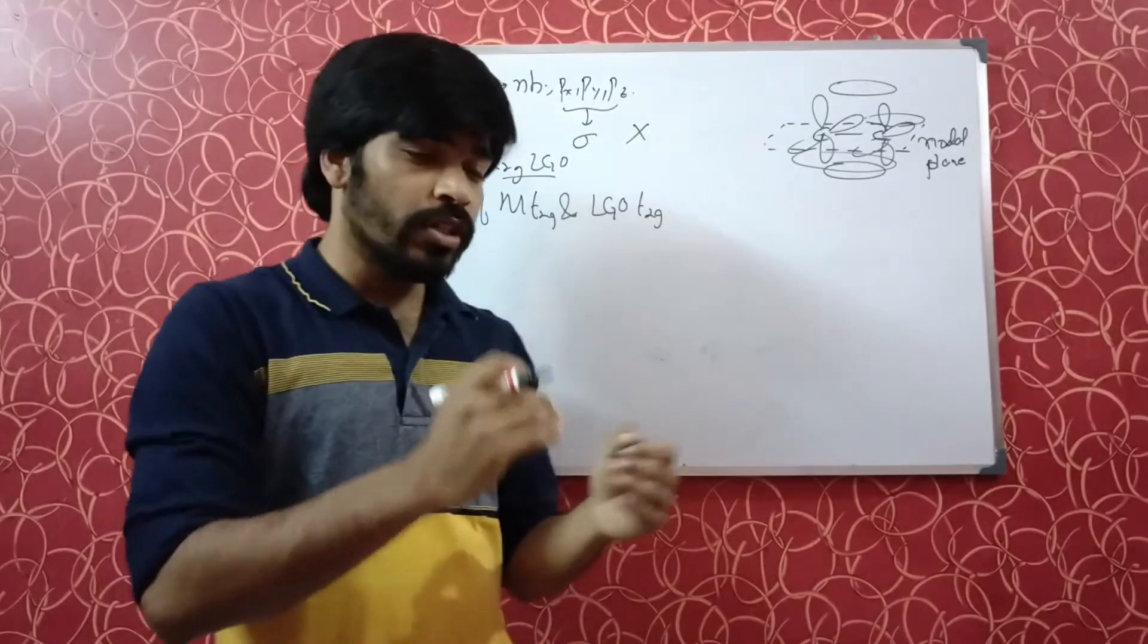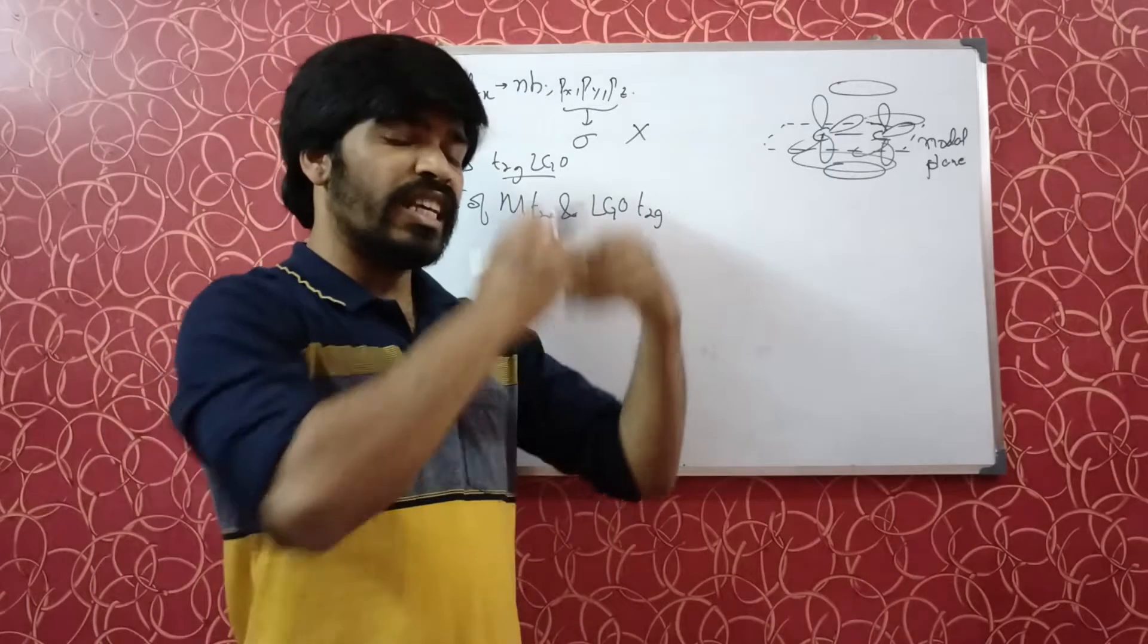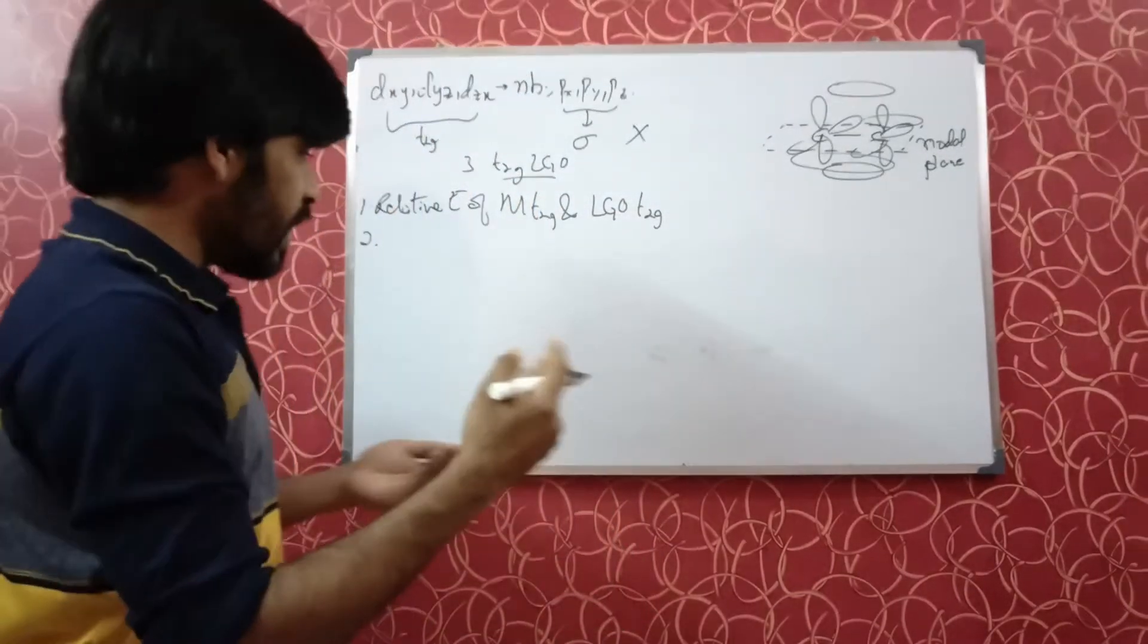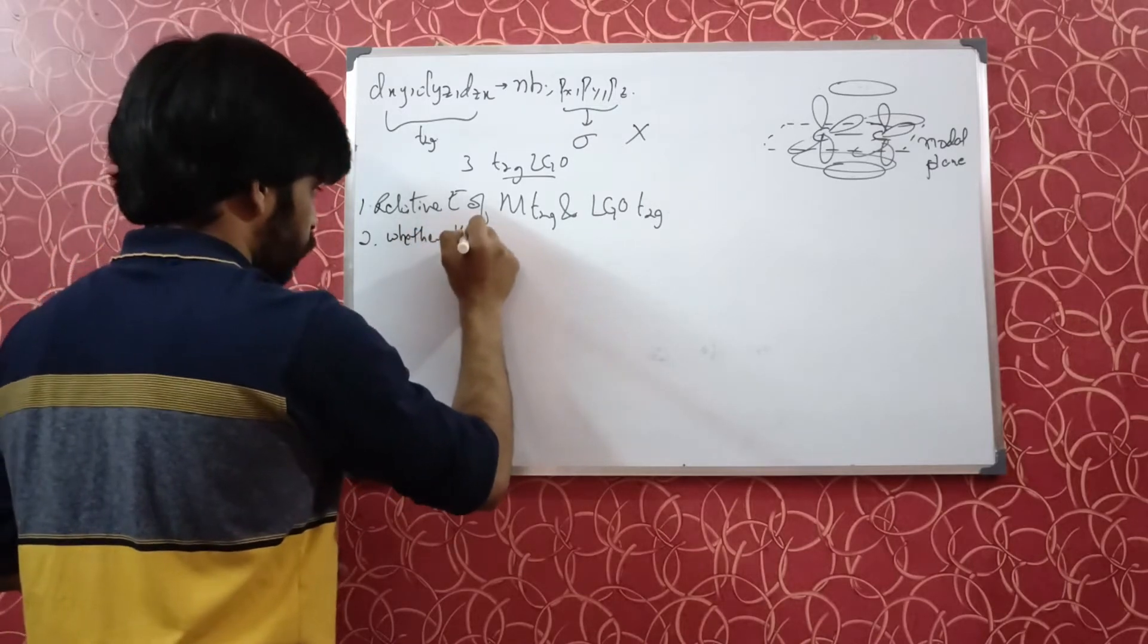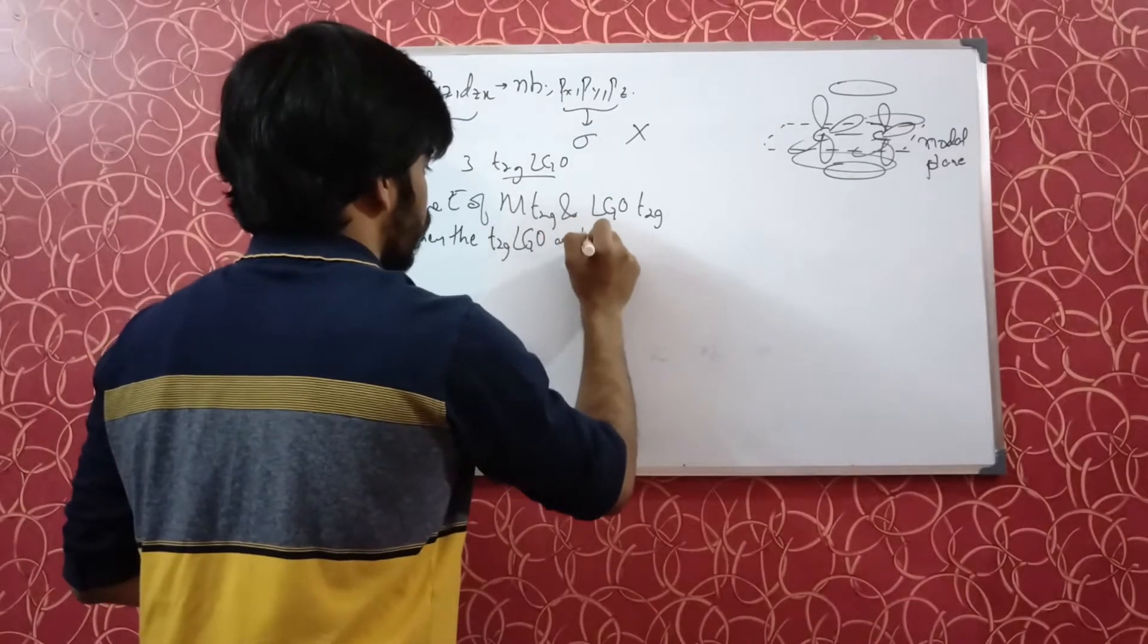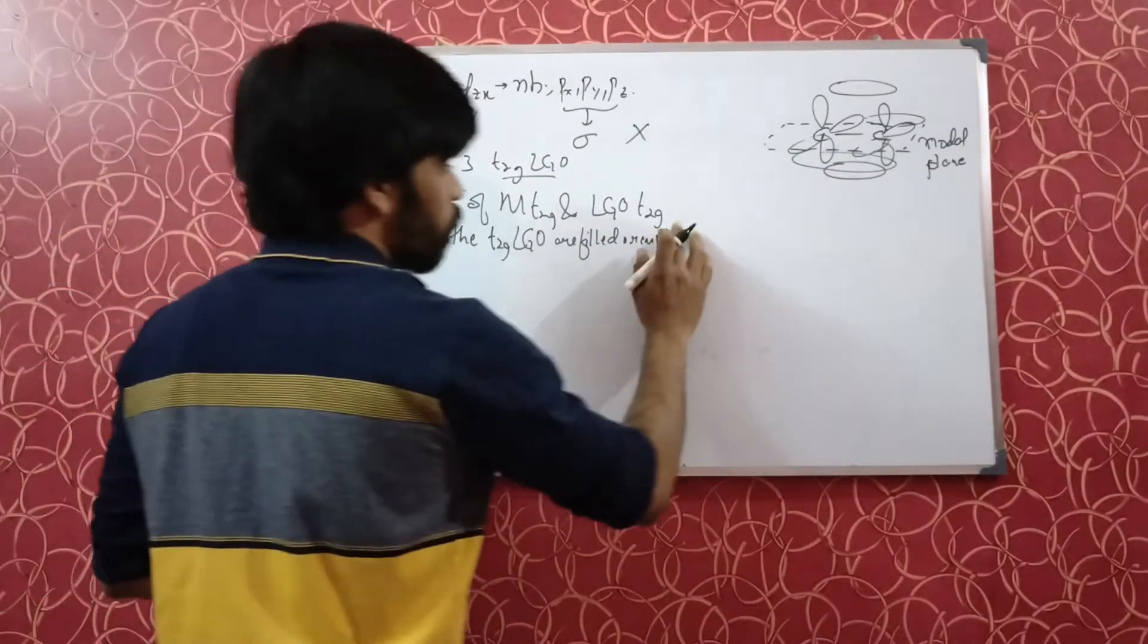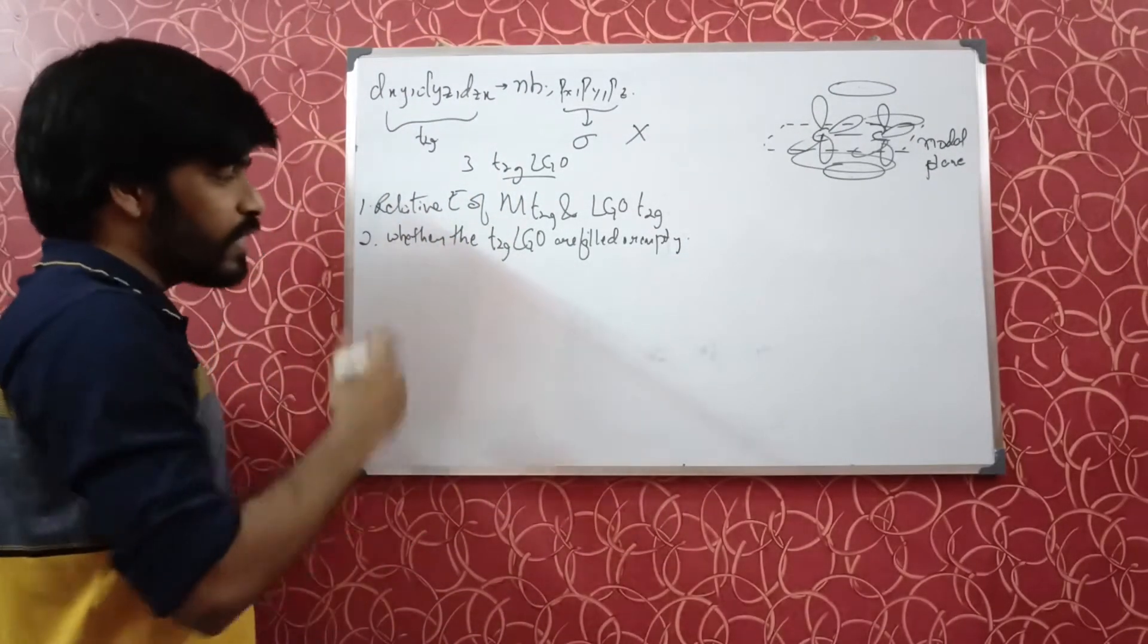If the energy difference is very large, then the stabilization of the bonding molecular orbital will be more and the destabilization of the ligand group orbital will be more. In that case, the interaction will be different compared to when the difference is less. Second is whether the t2g ligand group orbitals are filled or empty. This is also a very contributing factor in the strength of the interaction.